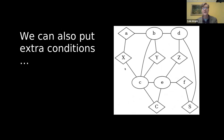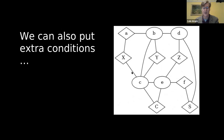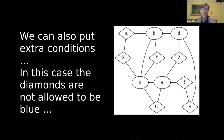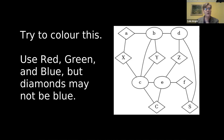We gain generality by switching to coloring networks, and we can also put on extra conditions. Here's a network where some nodes are round and some are diamond shapes. The rule is: you're going to use red, green, and blue, but the diamonds are not allowed to be blue. I can put on this extra condition. So with this network, we can use red, green, and blue, but the diamonds may not be blue.